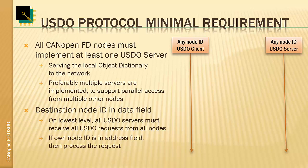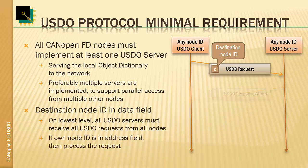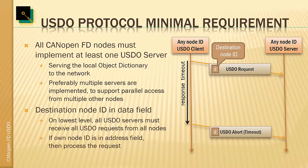As the destination node ID is part of the data field, any server on the CAN FD level needs to receive all USDO client requests from all other devices, examine the destination byte, and only if the destination byte matches its own node ID does it start processing the request. On the client side, we must implement a response timeout - if we transmit a USDO request and do not get a response within the timeout, the client itself must transmit a USDO abort with the timeout error code.